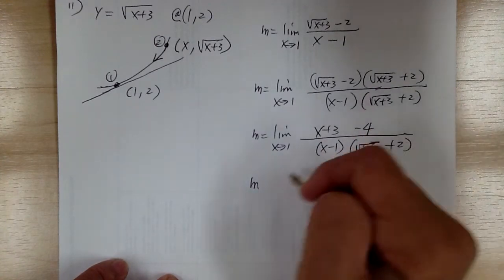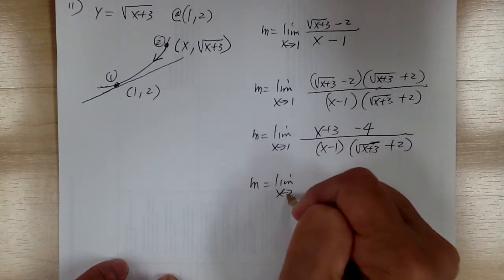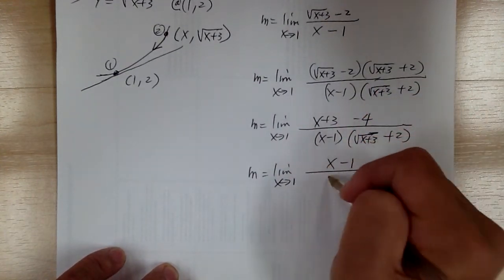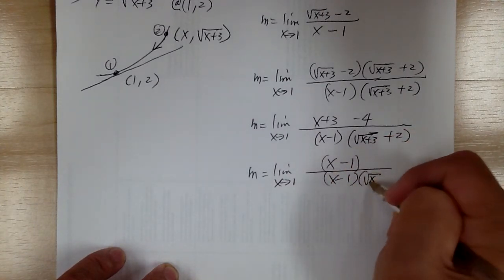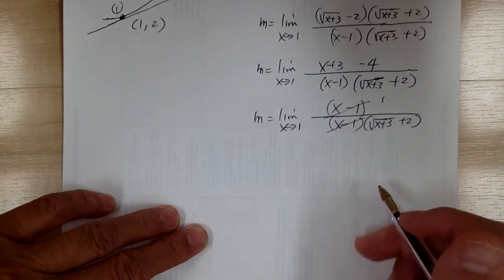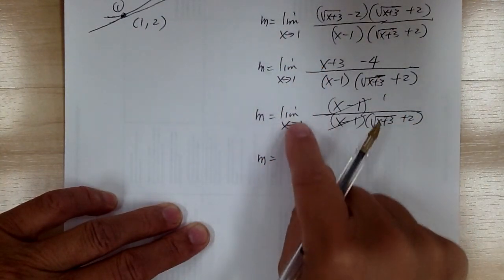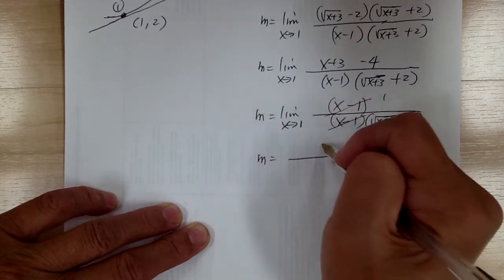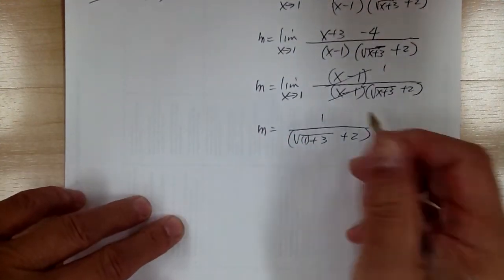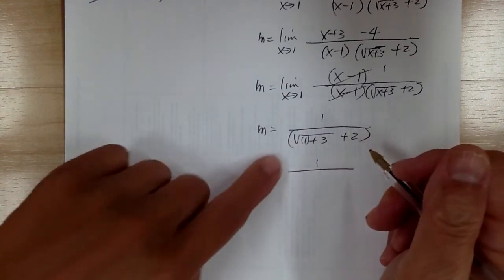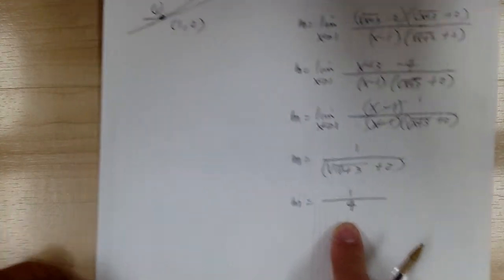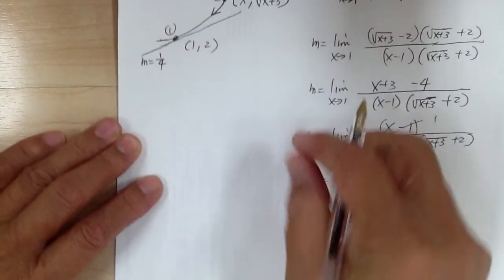This gives you x minus 1. If you do it correctly, it will always cancel out so you're able to substitute. This will cancel out and you get 1. Now you can go and substitute — you have to keep the limit until you substitute; once you substitute, you can drop the limit. So m equals 1 over square root of 1 plus 3 plus 2. Square root of 4 is 2, 2 plus 2 is 4. So slope equals 1 over 4.